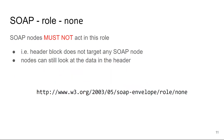The first standard role is the none role. The rule here is that no SOAP node must assume this role, which might seem weird. But this is basically a header block intended for the ultimate receiver. The rule doesn't say that intermediaries cannot look at the header blocks not targeted at them — they can have a look, but they cannot process those header blocks, which means they have to keep them in the message and pass them along without touching them.